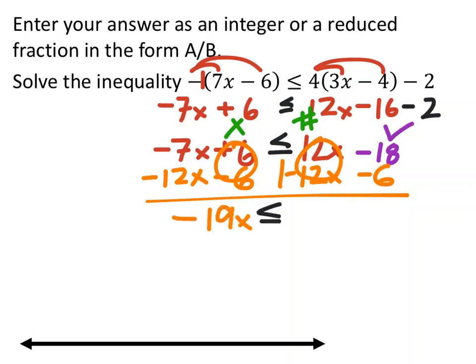That's the subtraction principle of equality used twice. Subtraction principle of equality or addition will not affect the way that the inequality faces. We got -18 - 6, which is -24. Then finally to solve this one, we would divide both sides by -19.